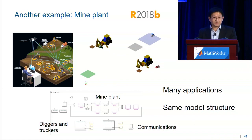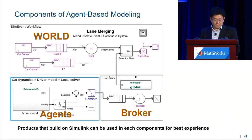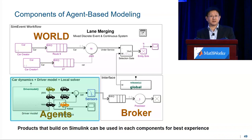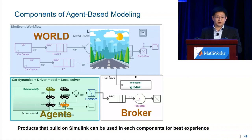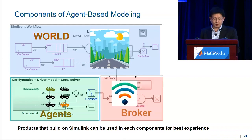So in summary, the components of agent-based design in model-based design are composed of three parts: the agents — basically the dynamics part; the world — the environment and simulation scenario; and the brokers that communicate among all these entities.